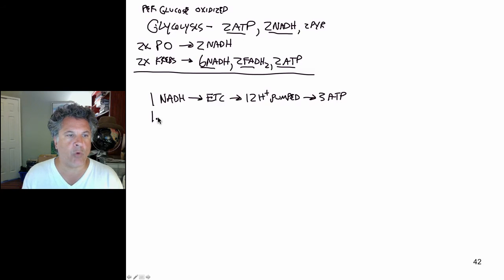If we have one FADH2 molecule that contributes electrons to the electron transport chain, that pumps eight protons out and yields two ATP. Every molecule of NADH yields three ATP through oxidative phosphorylation and every molecule of FADH2 yields two ATP through oxidative phosphorylation.